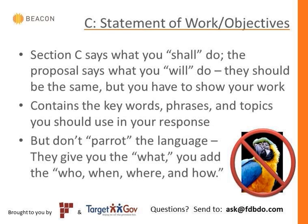The next important section is Section C, Statement of Work or Objectives. Section C tells you what you shall do, and your proposal is going to say what you will do. The government tells you what you shall do, and you say what you will do — these are the same things, but you have to show your work: the who, what, when, where, how, and why. It is important that you use the same language that is in the RFP. If they say 'content management system' and you say 'database,' you need to say 'content management system.' Some agencies use evaluation software that will go through your proposal and find keywords, so if they can't find what they're looking for, you are going to get a poor evaluation score.